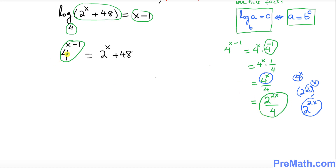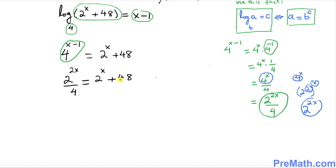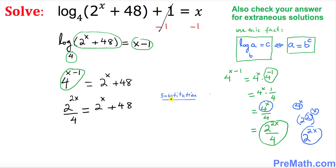Replacing 4^x with 2^(2x), the expression 4^(x−1) becomes 2^(2x) over 4. So our equation now looks like 2^(2x) over 4 equals 2^x plus 48.